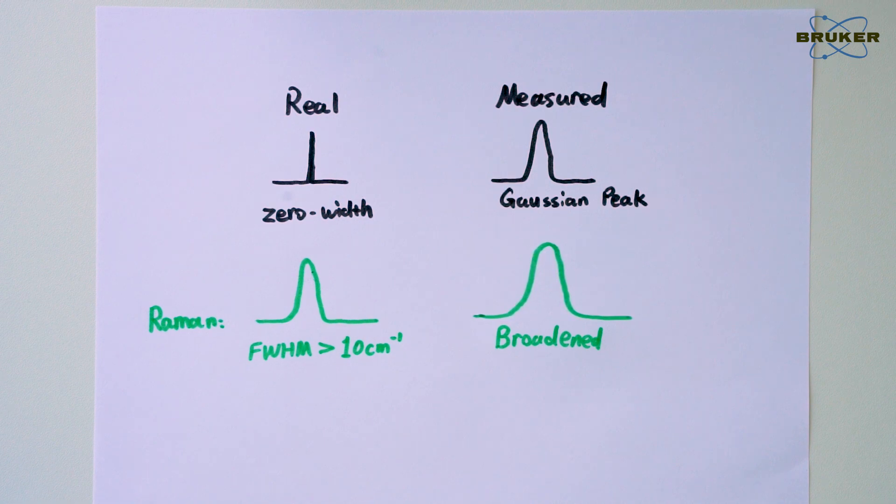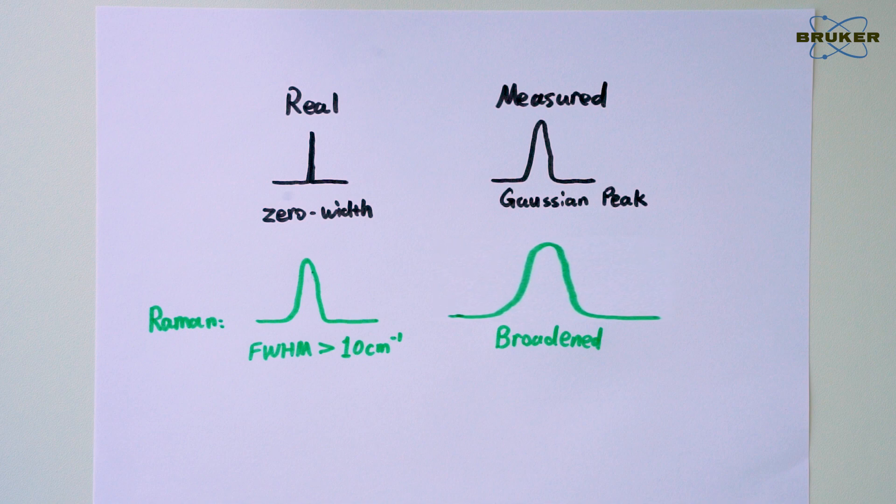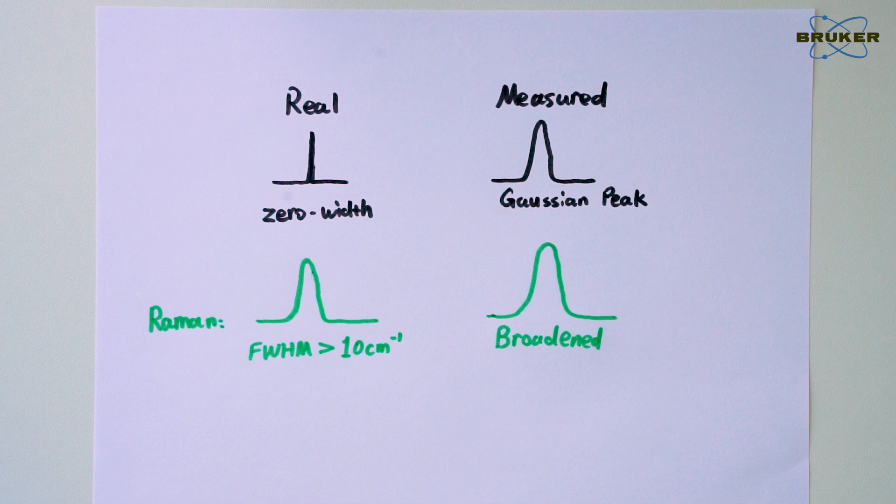If this value of our Raman spectrometer is too high, we are going to lose the capability of distinguishing peaks that are close by, or we don't notice if a peak's position changes slightly.